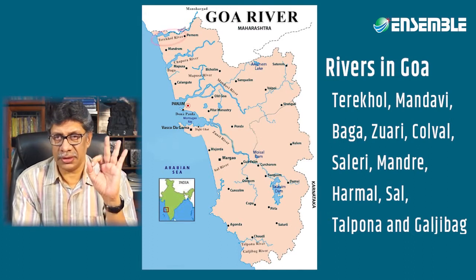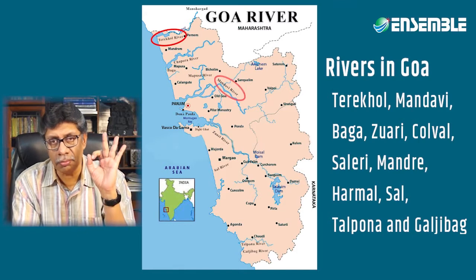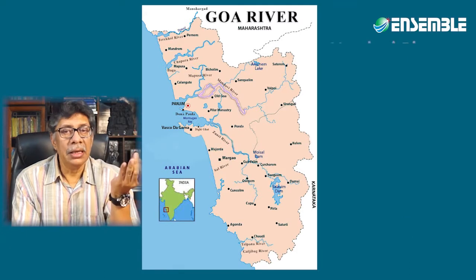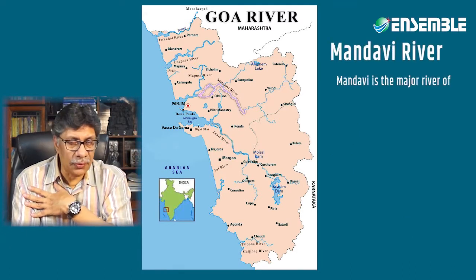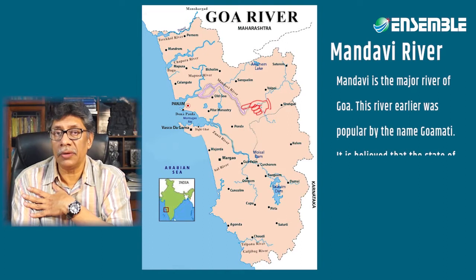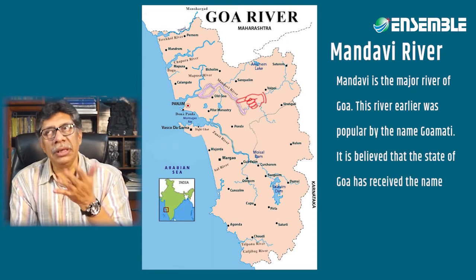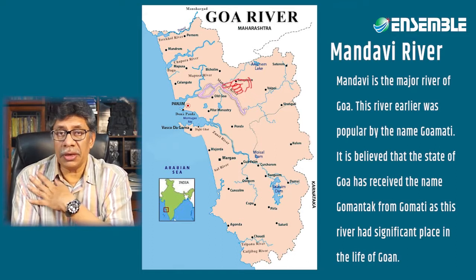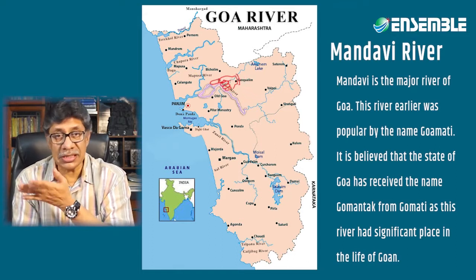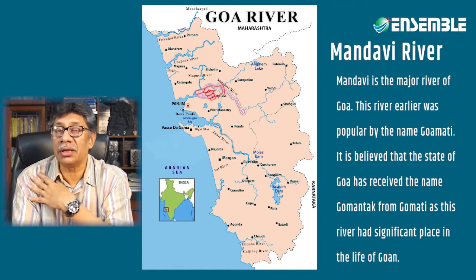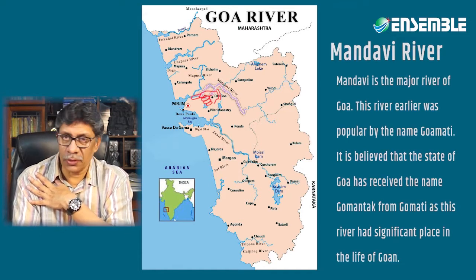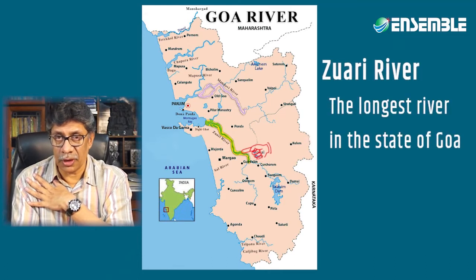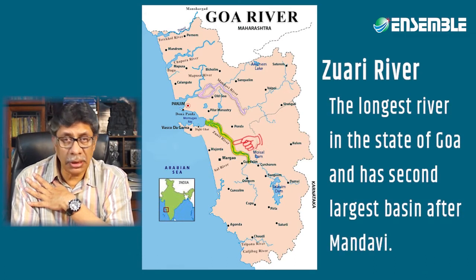Three of these are significant: Terekhol, Mandovi and Zuari. The Mandovi is the major river of Goa, earlier known by the name Gomati or Goa Mati. It is believed that the name Goa was taken from the Mandovi river. The Zuari river is the longest river in the state of Goa and has the second largest basin after Mandovi.